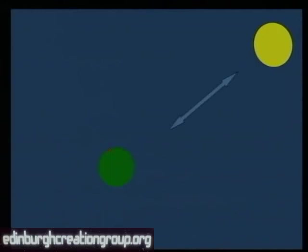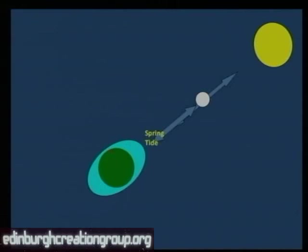So here we have the sun on the upper right. Again, we have the earth. And the sun does exert a pull on the earth. And if the moon is aligned with the sun — if you draw a line through the earth, the moon, and the sun — you get a very, very high tide. And this, of course, is what we call a spring tide.